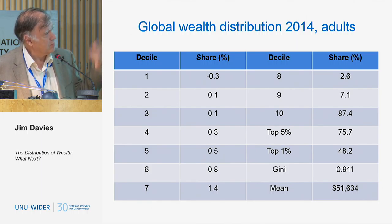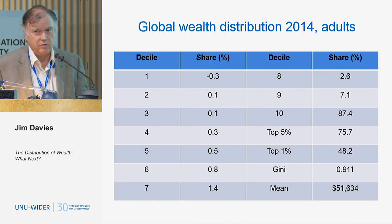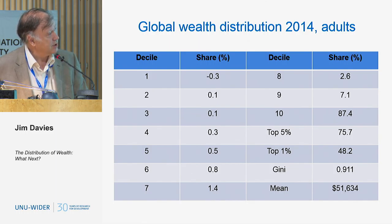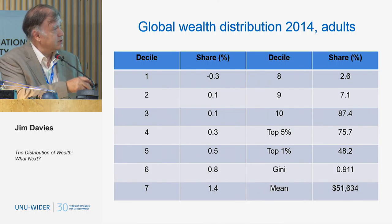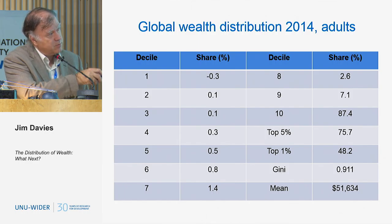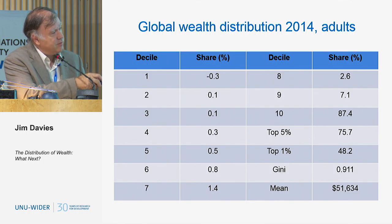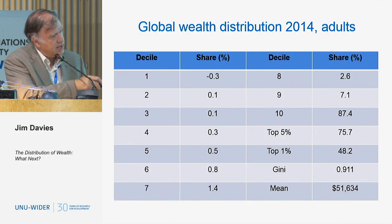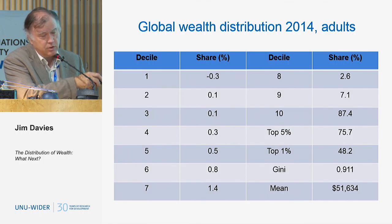Here are the numbers that would give you a Lorenz curve for world wealth distribution last year. The share of the top 1% we estimated last year was 48%. In October we'll come out with the number for 2015. The Gini coefficient is 0.911 — getting pretty close to the upper limit. The average wealth per adult in the world, all in US dollars, was $51,600 last year.